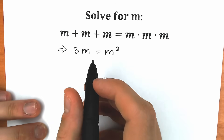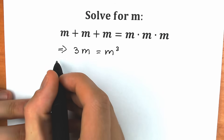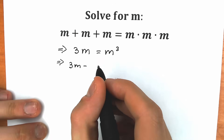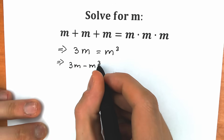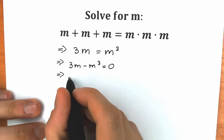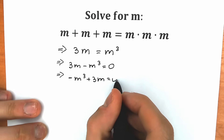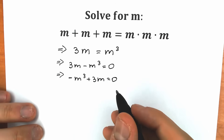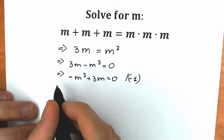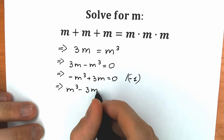This looks like a cubic equation. Let's bring m cubed from the right side to the left side. As a result, we have 3m minus m cubed equal to zero, or equivalently minus m cubed plus 3m equal to zero. We can multiply through by minus one, giving us the clean cubic equation: m cubed minus 3m equals zero.